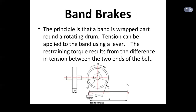The band brake diagram shows a lever, a pulley, and an attachment. The cable has tensions T1 and T2, and the applied force is represented as Fi, with speed shown as N. The principle is that a band is wrapped around a rotating drum, and tension is applied to the band using a lever. The restraining torque results from the difference in tension between the two ends of the belt.